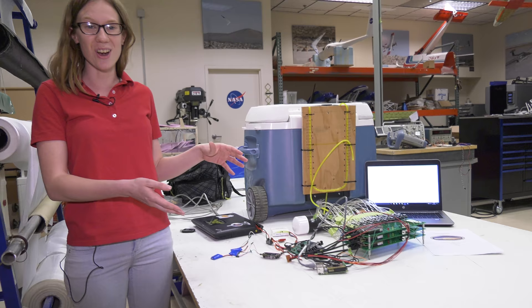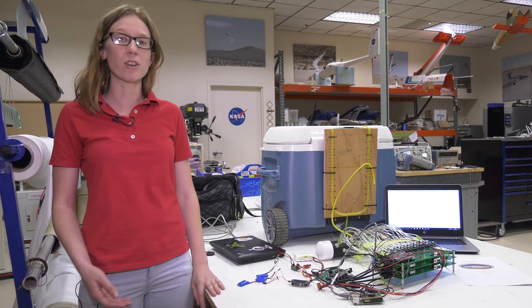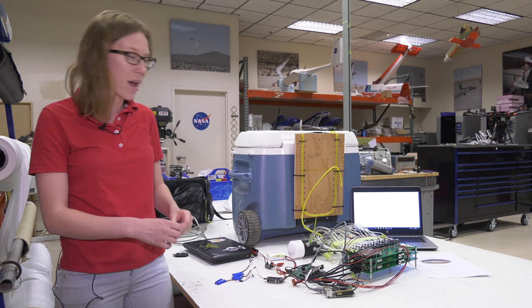This jumbled mess of wires you see before you is our EPM electronic pressure measurement system. What it's going to do is measure the pressure along the wing of the plane. That's what all of these tubes are for. They are mapped to different pressure ports on the wing.